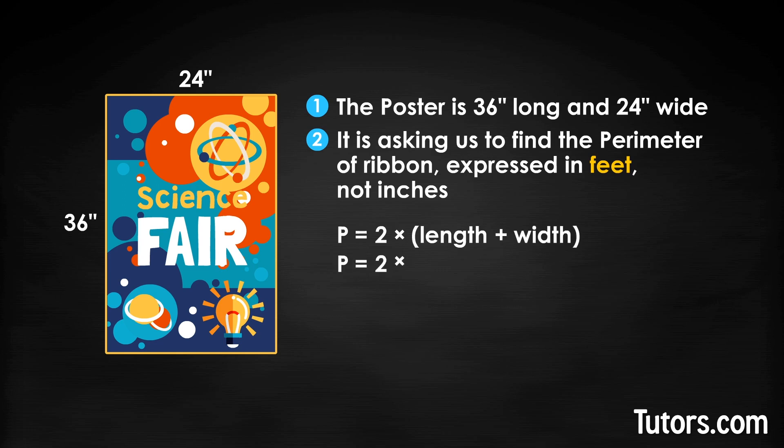P equals 2 times 36 plus 24. This becomes P equals 2 times 60, and our answer is P equals 120 inches or 10 feet. Cindy needs 10 feet of ribbon for the perimeter of her poster.